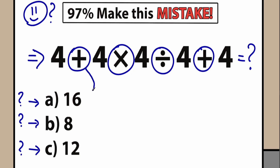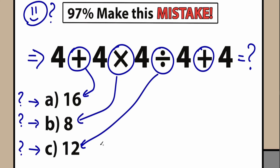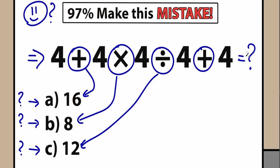For example, if we choose addition, maybe 16 is the answer. If we choose multiplication, maybe 8 is the answer. Maybe division first gives us 12. It turns into a big argument because we can't solve this question with three different answers. It's really weird to write that the correct answer is 16, 8, and 12 with three options. We need to have one and only one correct answer to this question.